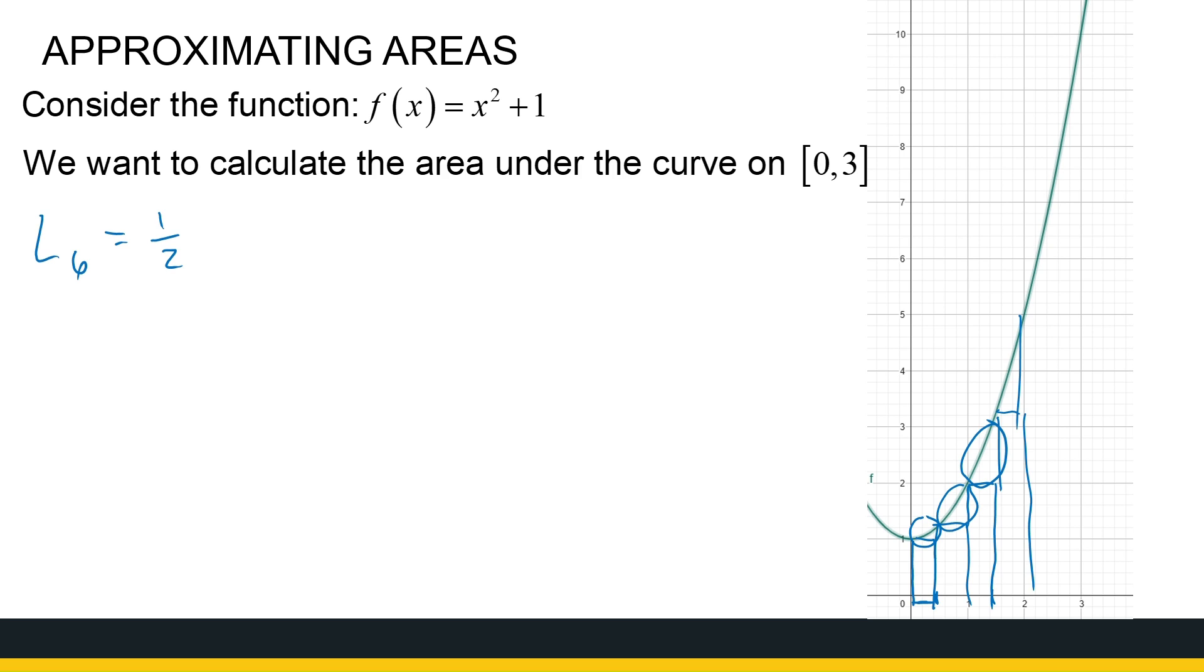So it's a half times the left-hand point. So it's f(0). Plus a half times f(1/2). Plus a half times f(1). Plus a half times f(1.5). Plus a half times f(2). We're getting there. Plus a half times f(2.5). We should have six, one, two, three, four, five, six sums.